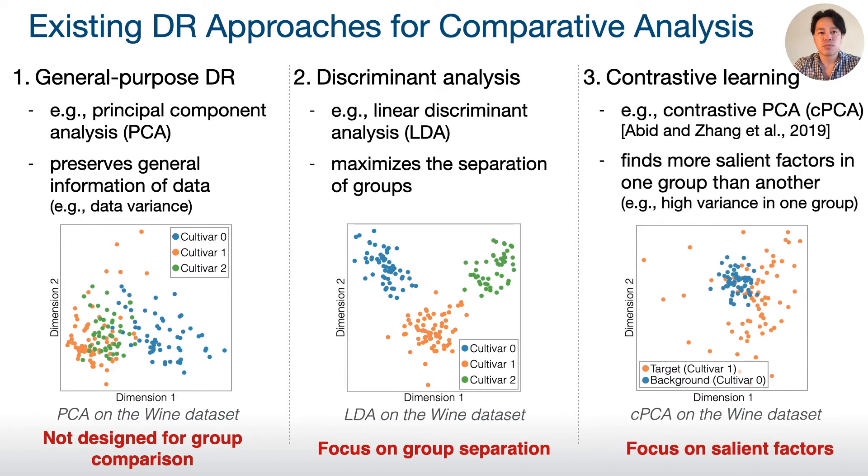The last approach is using contrastive learning methods, such as contrastive PCA or CPCA. This approach focuses on finding salient factors in one group by comparing it with another group.